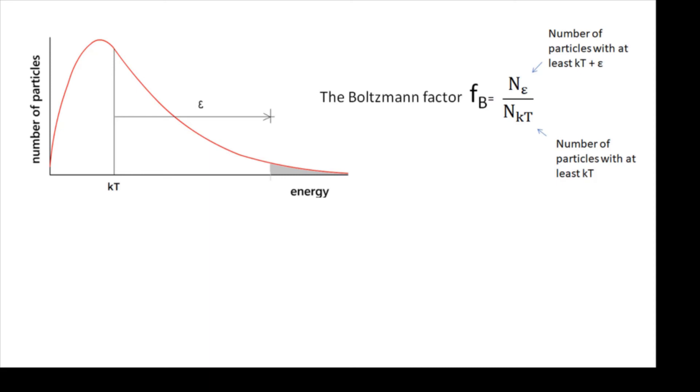I mentioned before that after KT it looks very much like an exponential function, and it is. The Boltzmann Factor is equal to e to the minus epsilon over KT, and that's how we can work out what the fraction of particles which have a certain amount of additional energy is.